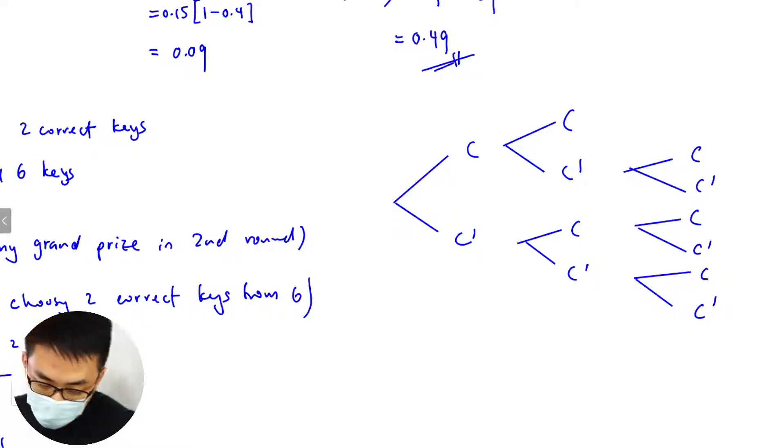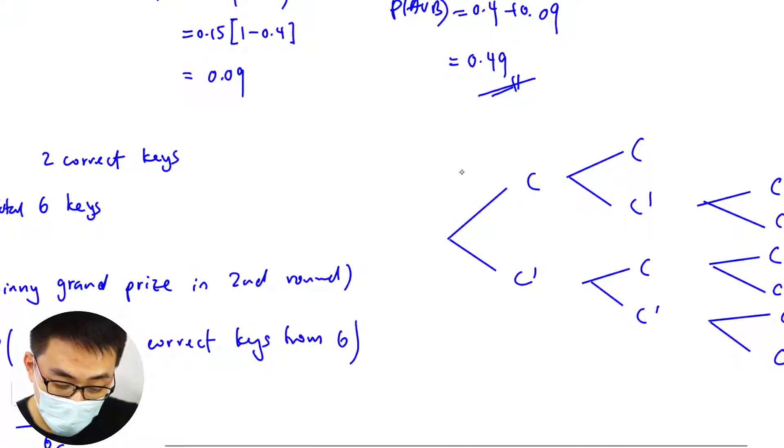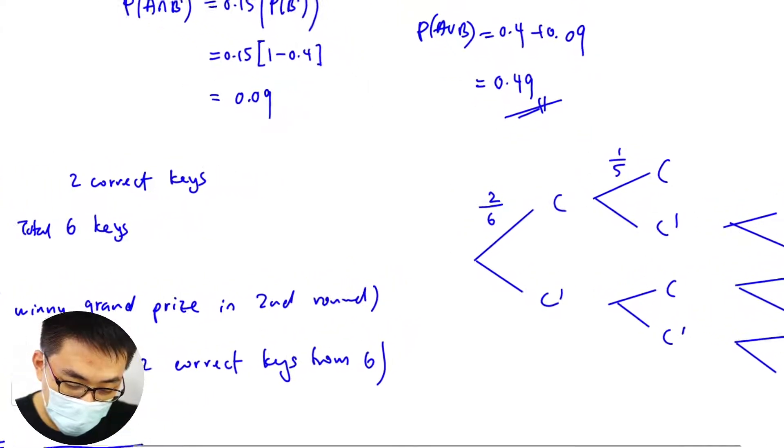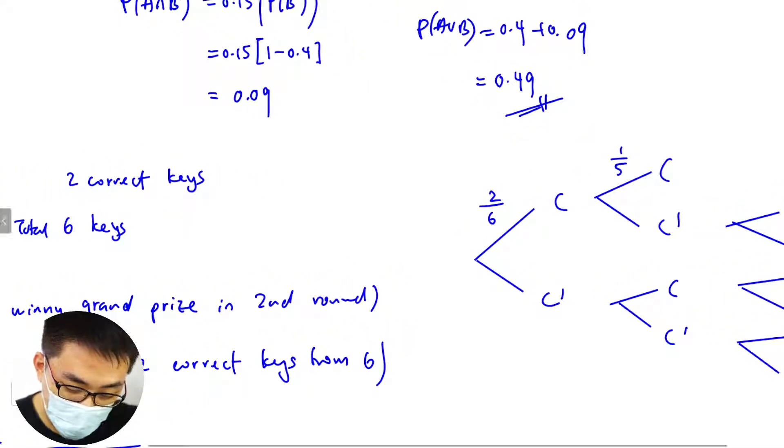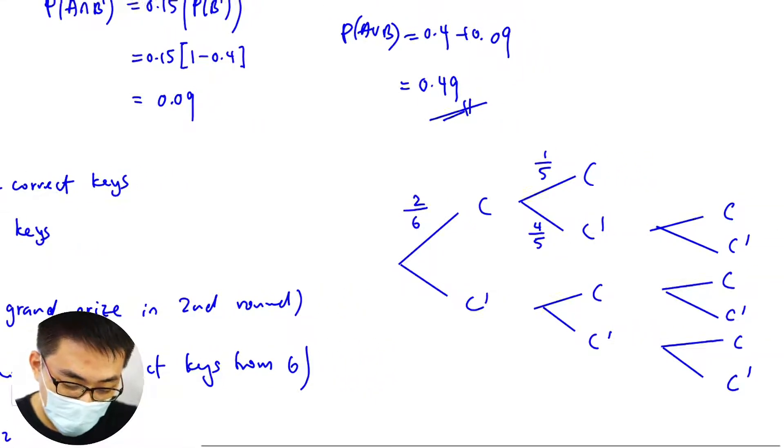Okay there you go, quite interesting. So this one here will be 2 out of 6, 1 out of 6. Well actually the tree diagram may be quite easy, so 1/5. Then this is, yeah, then this will be... six keys right, 2 out of 6, so this will be 4 out of 5. Five, the non-correct keys are 4.